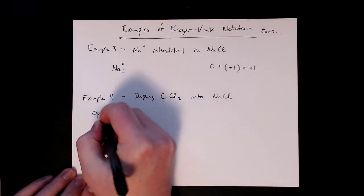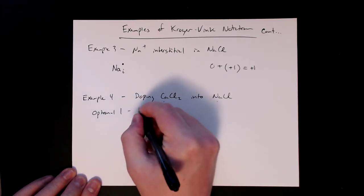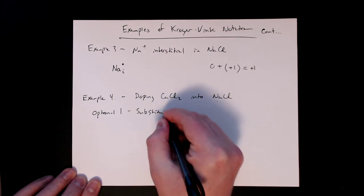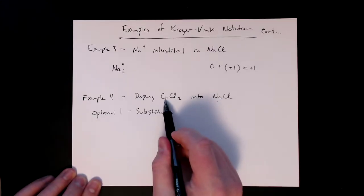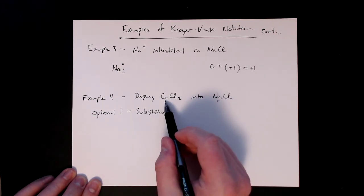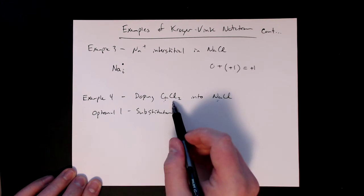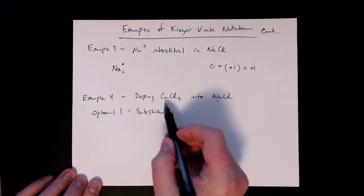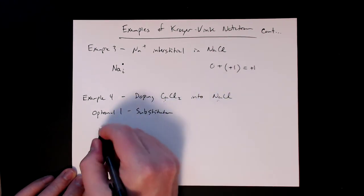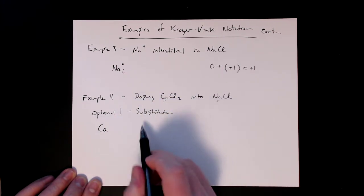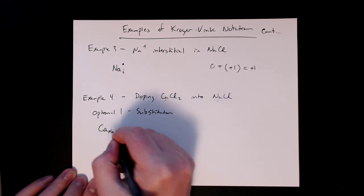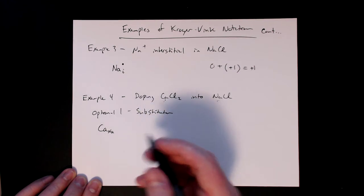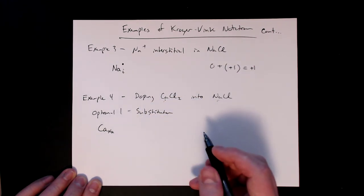And so option one here is substitution, so not interstitial. So here, we're going to substitute the sodium for calcium and chlorine for chlorine. So our species in this is the calcium to start with. So that's our species. And it's substituting, so it's taking the place of a sodium. So it's going to go into the position of sodium, and then we have to consider charge here.